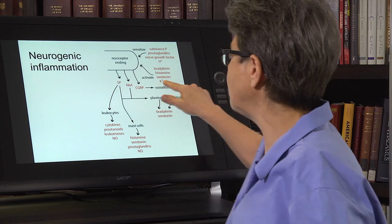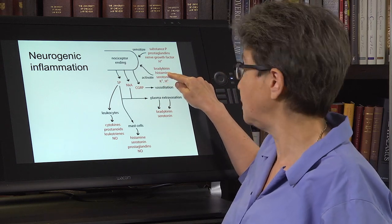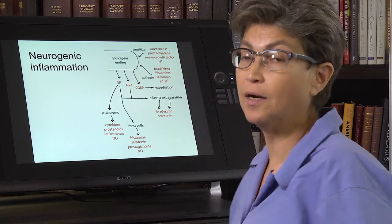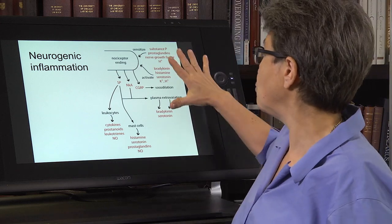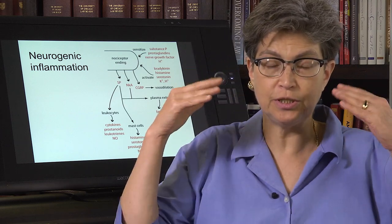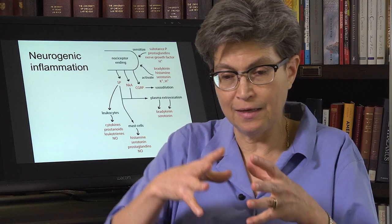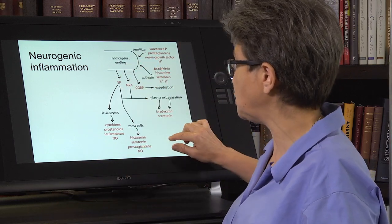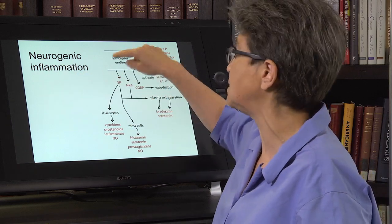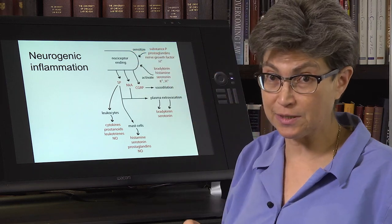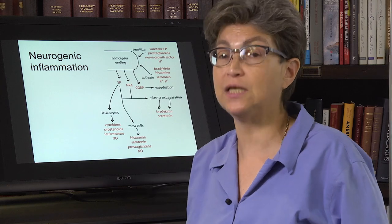Activating the nociceptors will cause spontaneous pain. Sensitizing them is going to cause hyperalgesia and possibly allodynia as well. This is the way that peripheral damage leads to inflammation and pain. The nociceptor is making this inflammation — that's why it's called neurogenic inflammation — which then facilitates the pain experience.